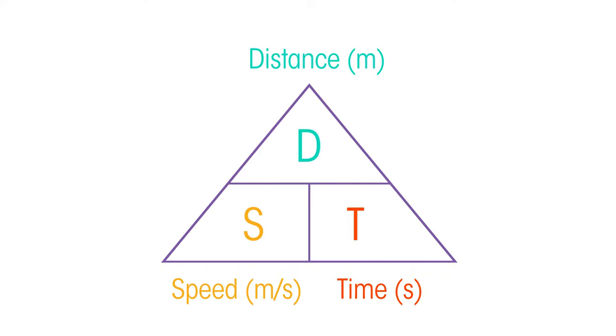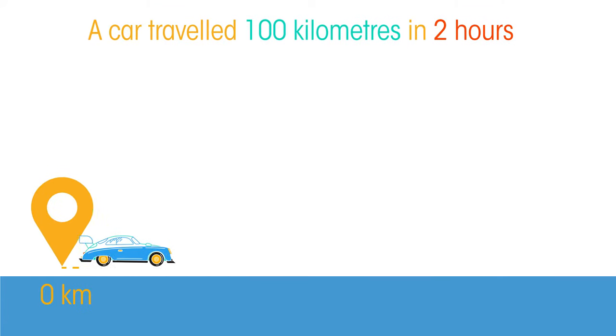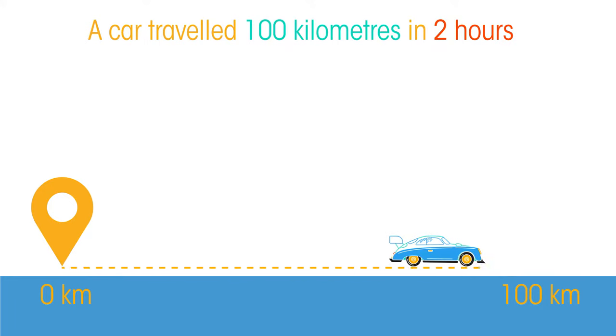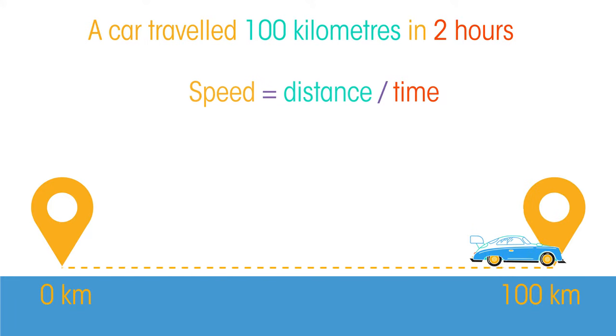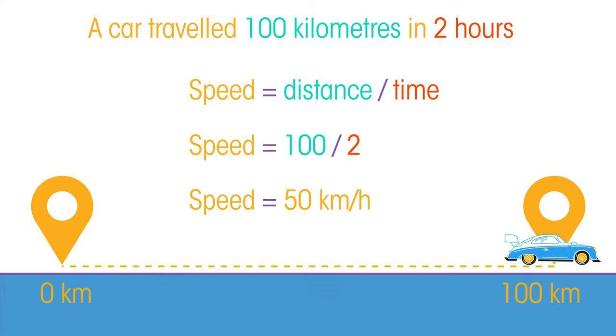For example, meters per second or kilometers per hour. Let's look at an example: a car traveled 100 kilometers in two hours — what was its speed? So 100 divided by 2 equals 50 kilometers per hour.